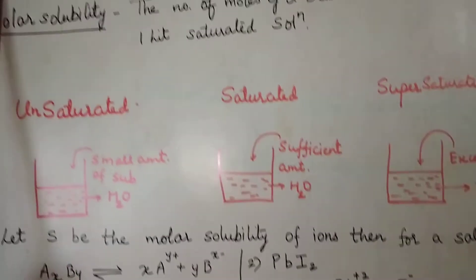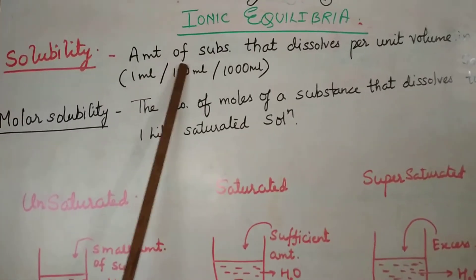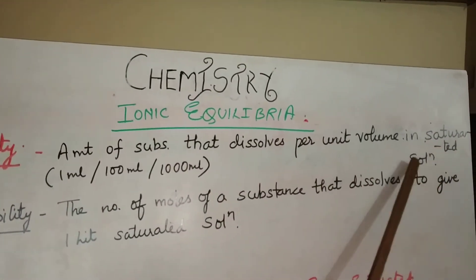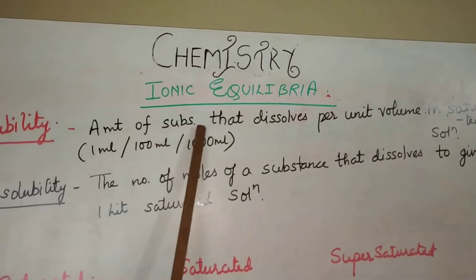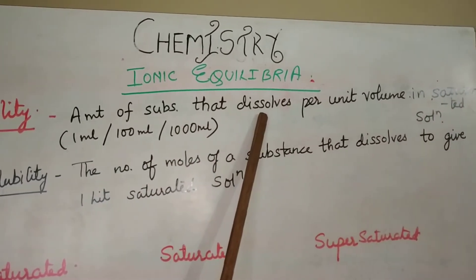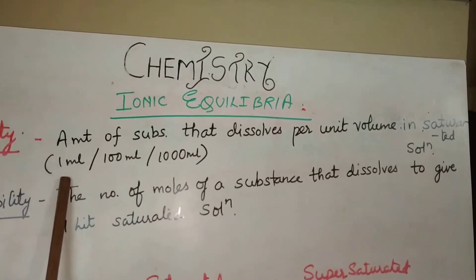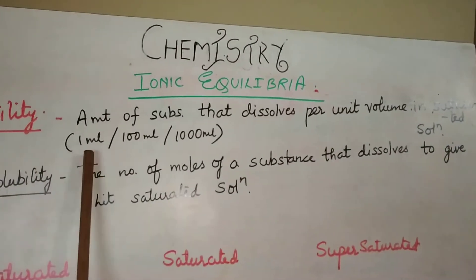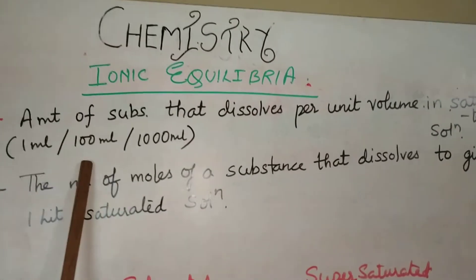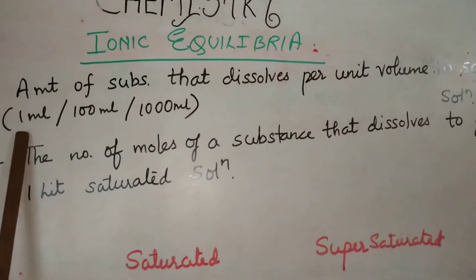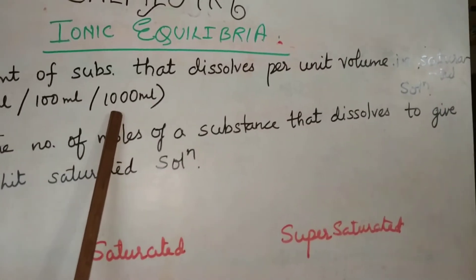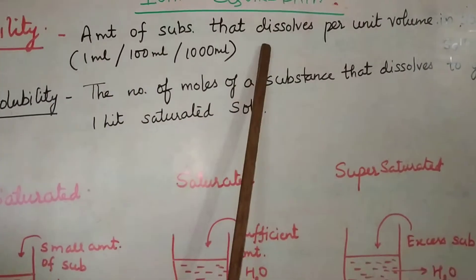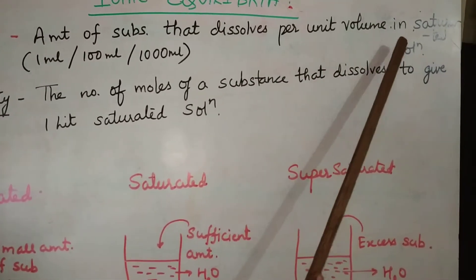Now we will see the definition of solubility. What is solubility? You define it as the amount of substance that dissolves per unit volume in a saturated solution. Per unit volume means how much dissolves in 1 ml, or 100 ml, or 1000 ml — that is, per 1 liter. The amount considered per unit volume in a saturated solution is said to be solubility.